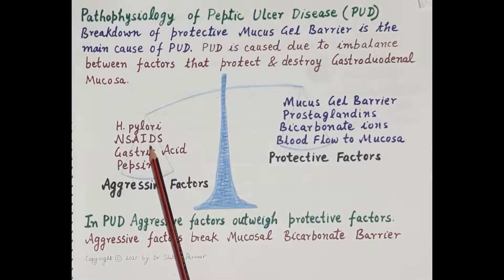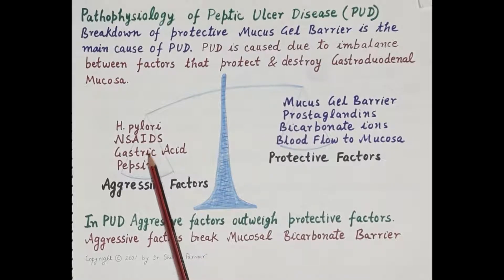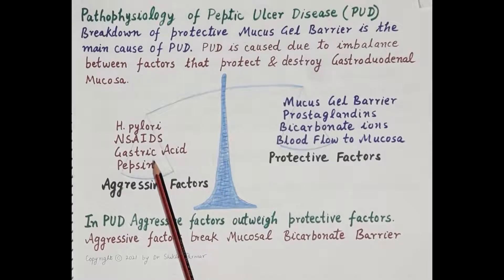A second cause of peptic ulcer disease is the use of non-steroidal anti-inflammatory drugs (NSAIDs). These drugs hinder the production of prostaglandins, specifically the ulcer-protective prostaglandin E2 and I2, by mucosal epithelial cells. Apart from this, excessive production of gastric acid is one of the main causes of peptic ulcer disease.